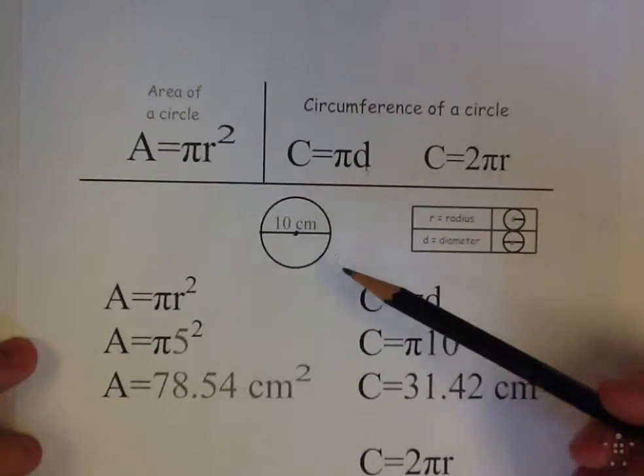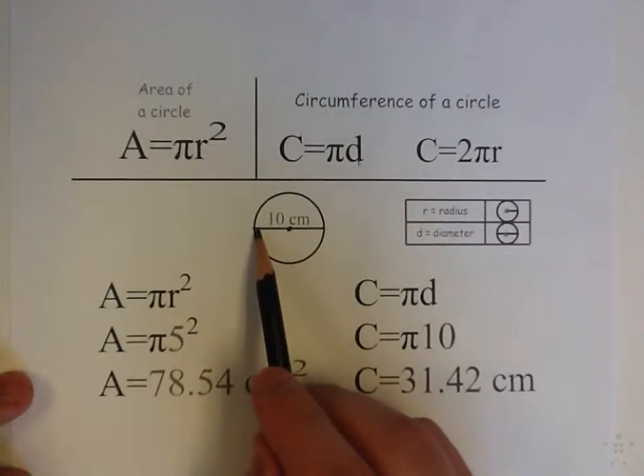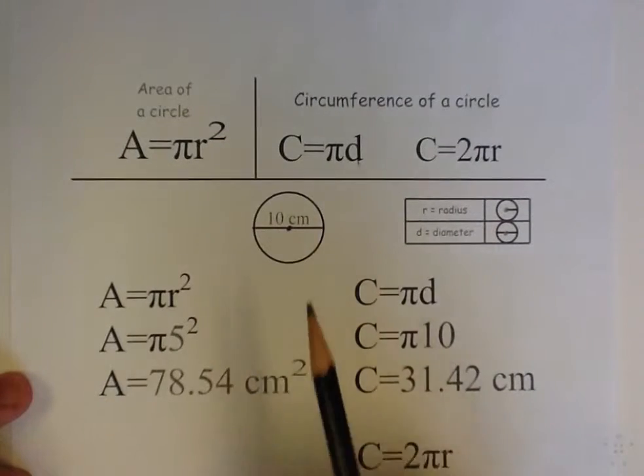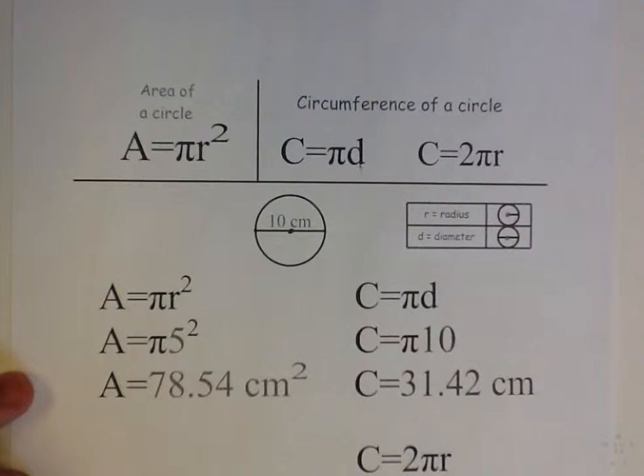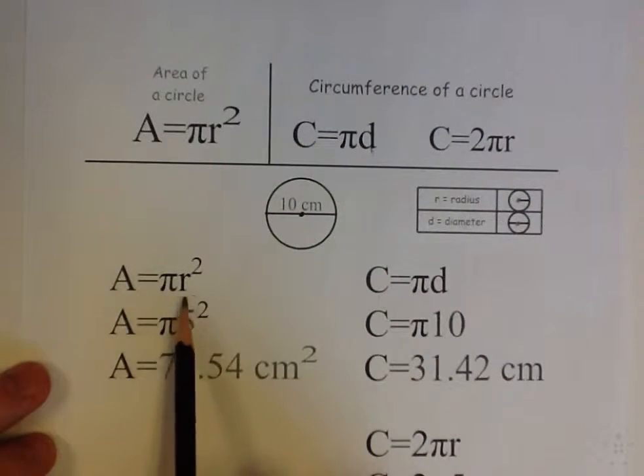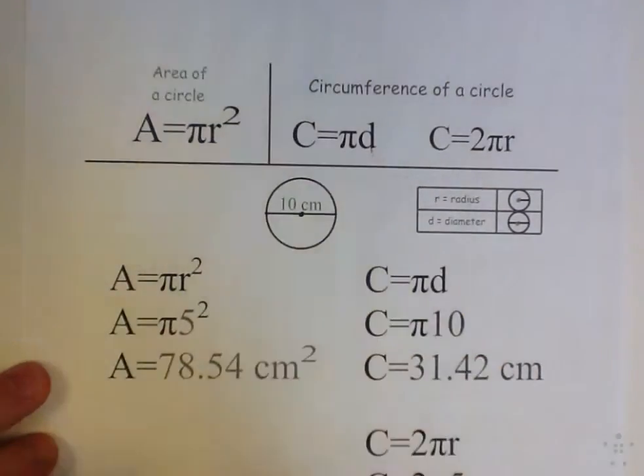So let's look at this example here. I have a circle here, and it gives us that the diameter, the entire length of this line that goes through the center of the circle, is 10 centimeters. If I want to find out the area, I use my formula A equals pi times R squared.